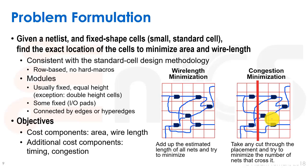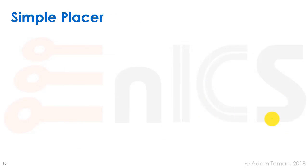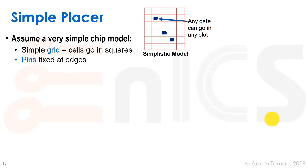We're going to start by building a very simple placer - a trial placer, not necessarily a good one, but just as a basic way to go about our algorithm. We'll assume a very simple chip model - we'll have a grid of different locations called one, two, three, four on the x-axis and by the y-axis. We'll assume that each of our cells can go into one of these grid places, and for our pins we'll put them at set places, at fixed places on the edges.